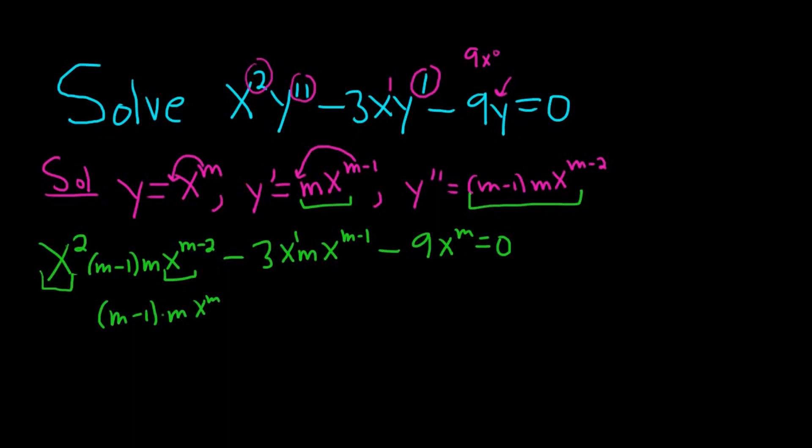Same thing here. It's 1 plus m minus 1. That's x to the m. So minus 3m x to the m. And then minus 9x to the m. And this is all equal to 0.